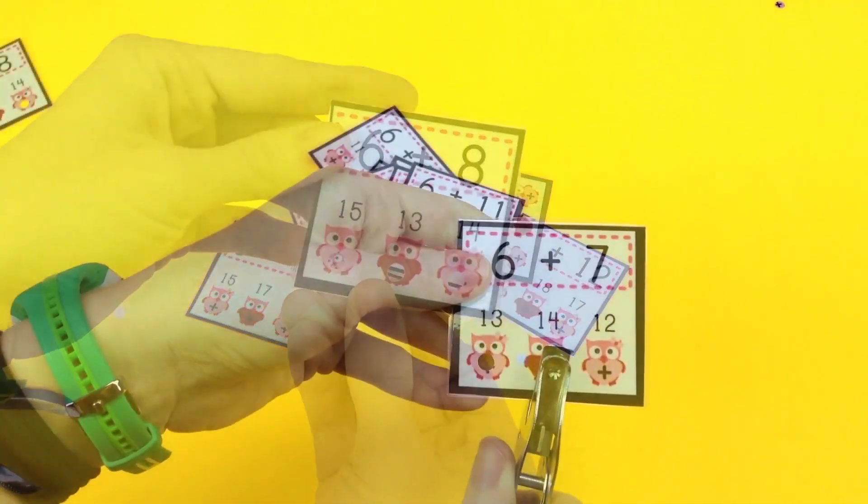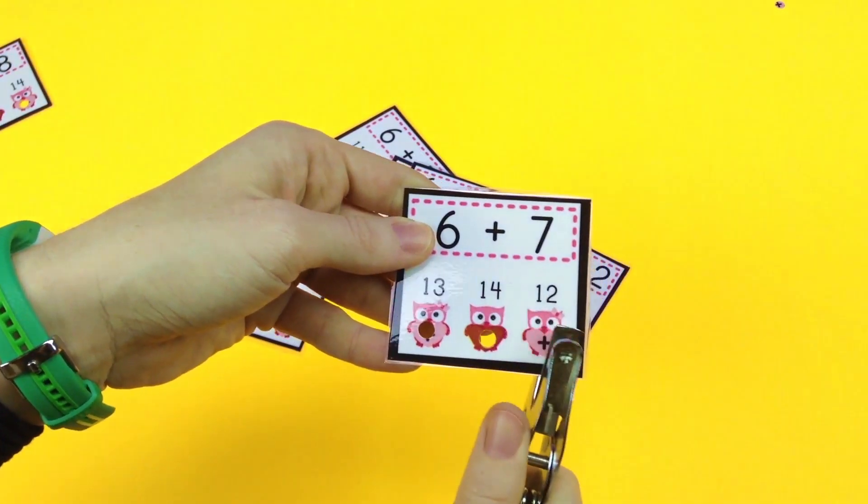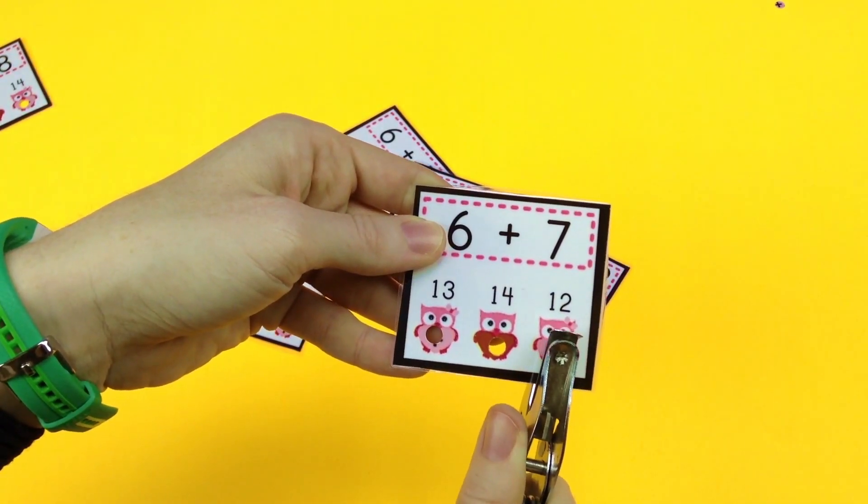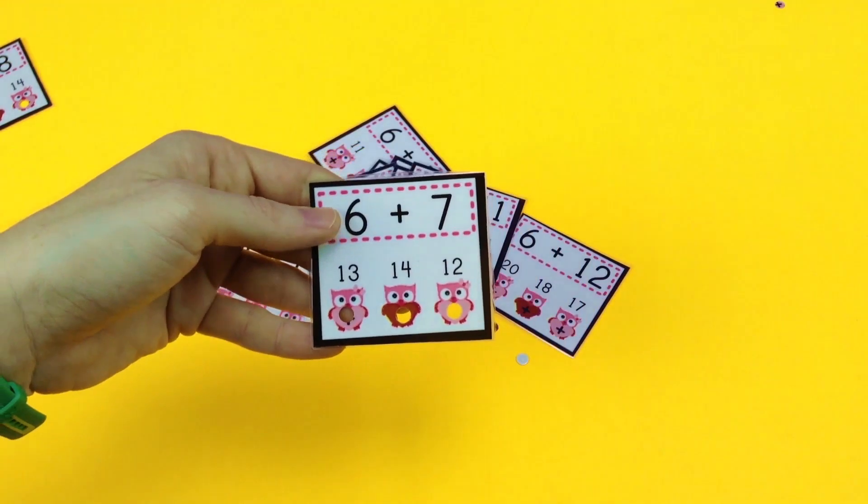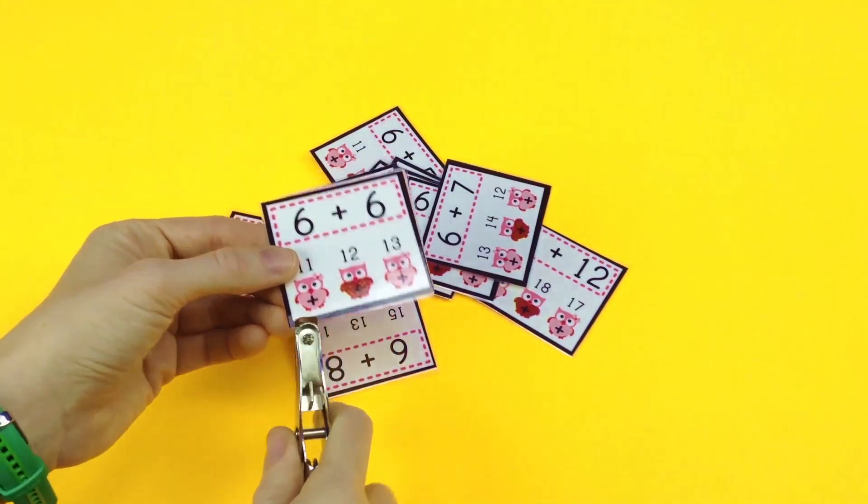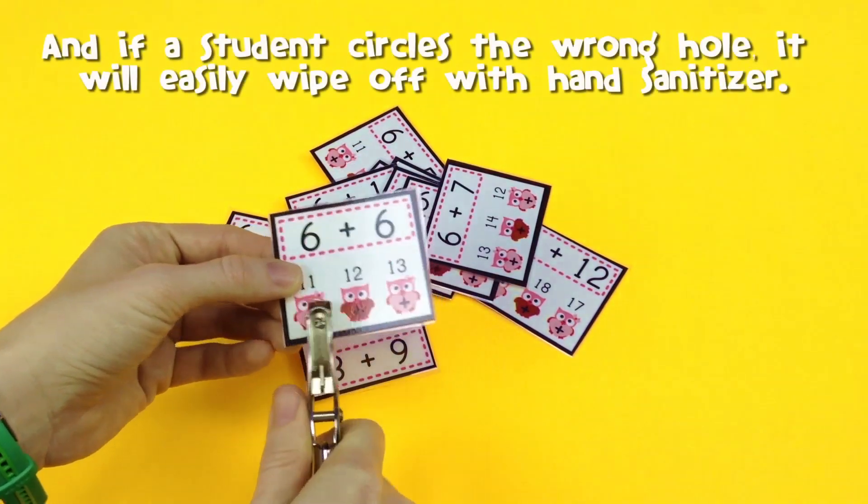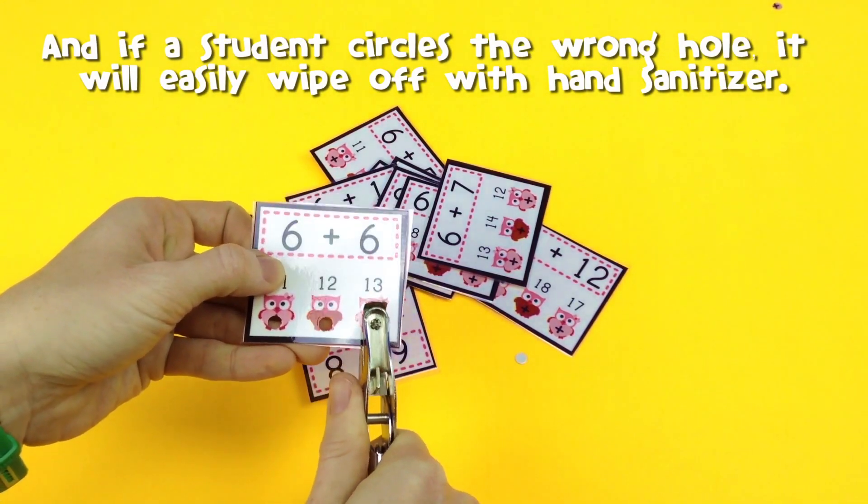Now with these, when you're prepping them, don't do this yourself. Obviously send them to parent volunteers, or if you have early finishers, they can help you, especially with the hole punching and circling the right answers because then they're getting that math practice anyway.